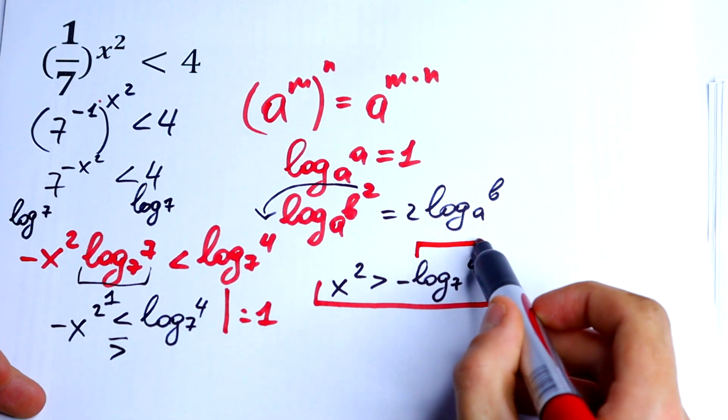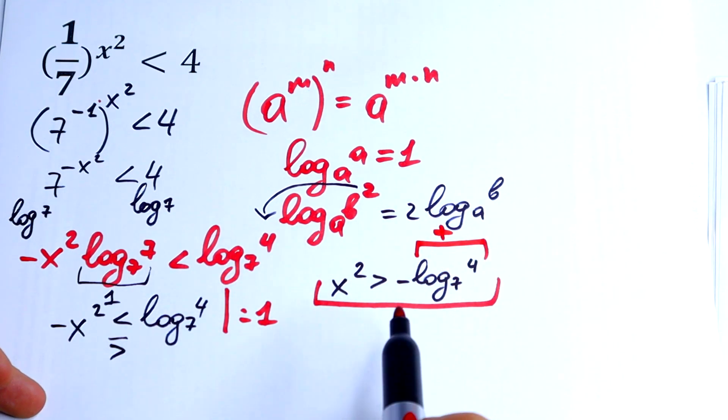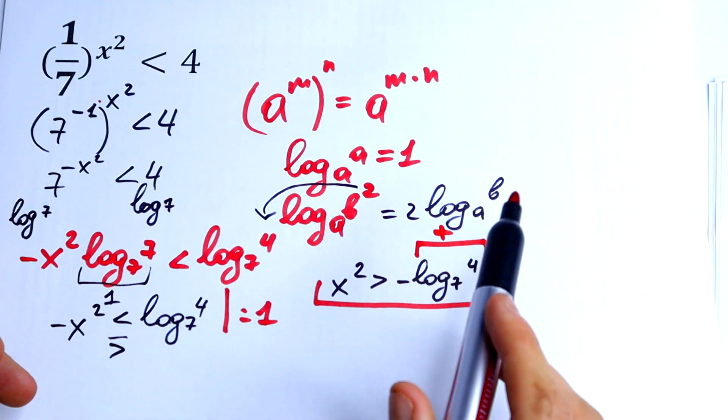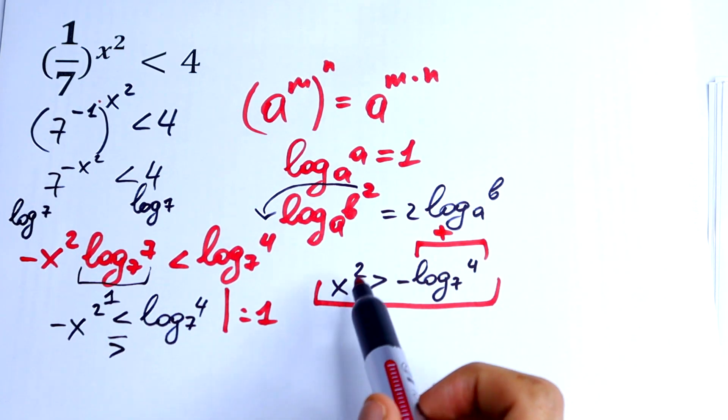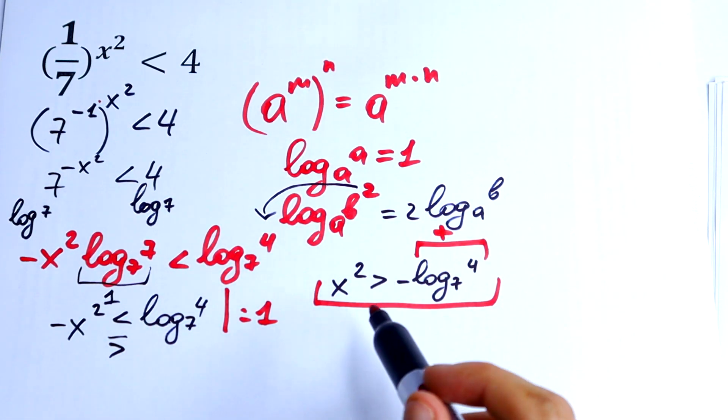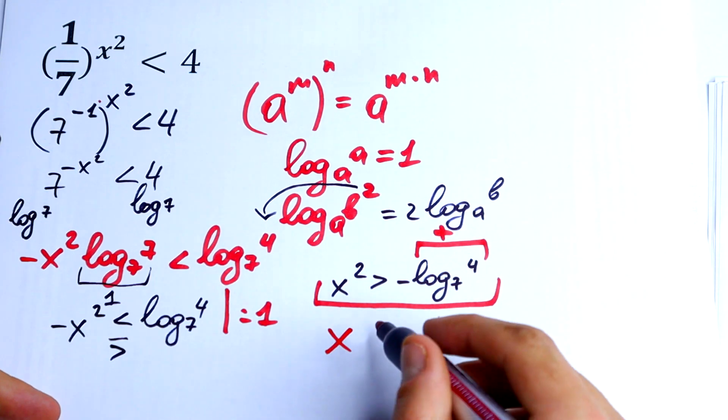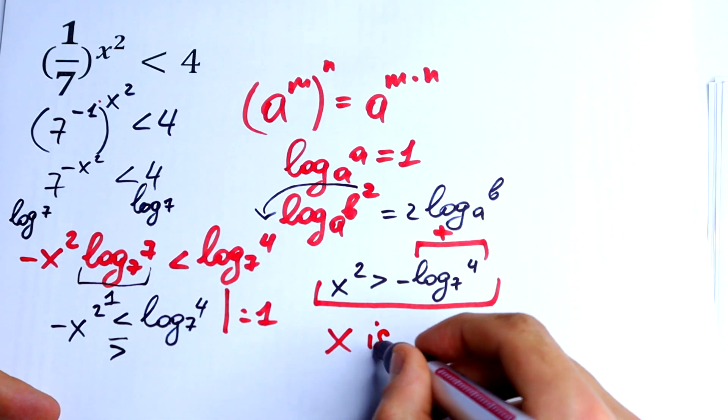Because this is a plus, this is a minus. So it doesn't matter what will be x, this inequality will work for all real numbers of x.